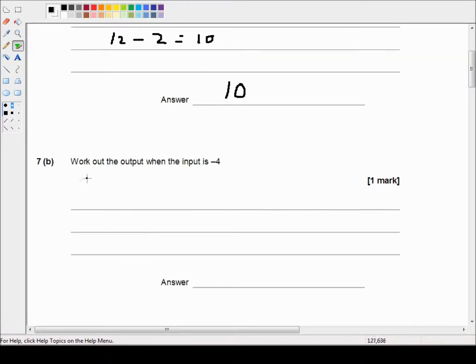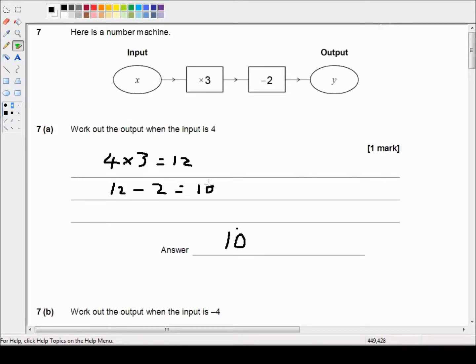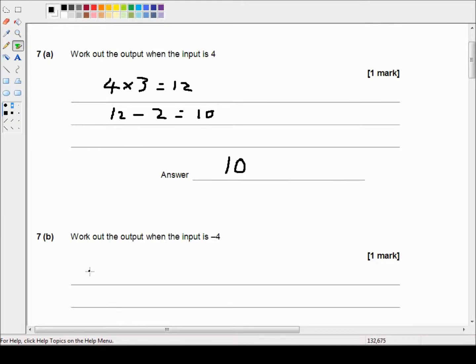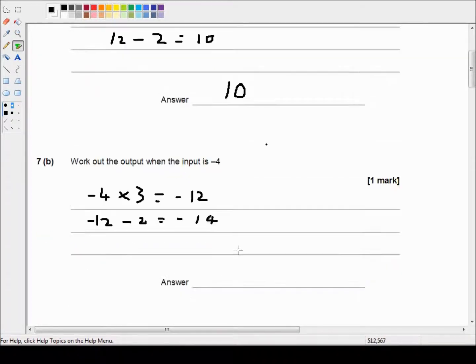Now work out the output when the input is negative 4. Negative 4 goes in, it's multiplied by 3 which makes negative 12. Then we have negative 12 and we subtract 2, which equals negative 14. So our answer is negative 14.